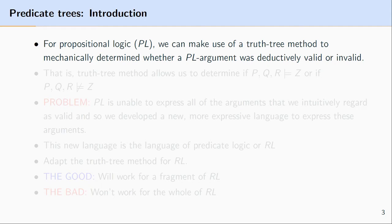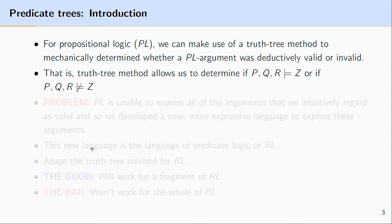For any propositional logic argument we can apply the truth tree method and determine if the argument is deductively valid or invalid. More exactly, the truth tree method for propositional logic allows us to mechanically determine if a formula is semantically entailed by another set of formulas — for example, whether Z is entailed by P, Q, and R, or not entailed.